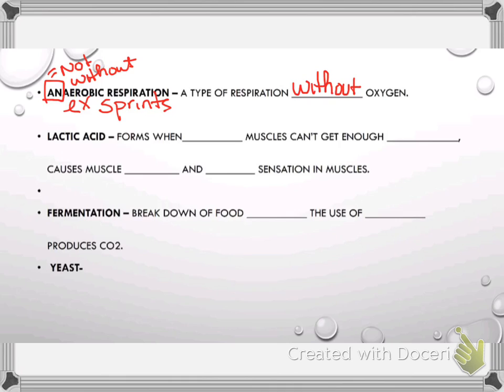So, lactic acid. You've all experienced this, I'm sure, if you've done physical activity. There's times. Oh, I have a little typo in there. Take out that line. I don't know what I did. You can scribble through it. Forms when muscles can't get enough oxygen. And it causes your muscles to fatigue and a burning sensation in your muscles. So, you know, after you've had a really hard workout or you've gone for a really long run or you did lots of sprints and your calves are sore or maybe your legs. That is because your body went through a type of anaerobic respiration and lactic acid formed because of that. Because you couldn't get enough oxygen. And so, this lactic acid forms in your muscles and it's what makes your muscles sore.